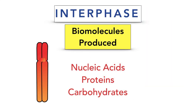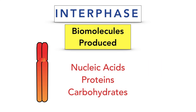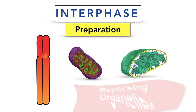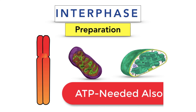During interphase many biomolecules would be produced, including nucleic acids such as RNA and DNA, proteins, and many different carbohydrates. Late in interphase, the cell readies itself for the events of mitosis, so the DNA is duplicated ensuring there are two copies. Organelles are replicated — like mitochondria and chloroplasts — ensuring there are extra sets for the new cells, and the cell also produces a lot more ATP because a lot of energy is going to be needed for mitosis.